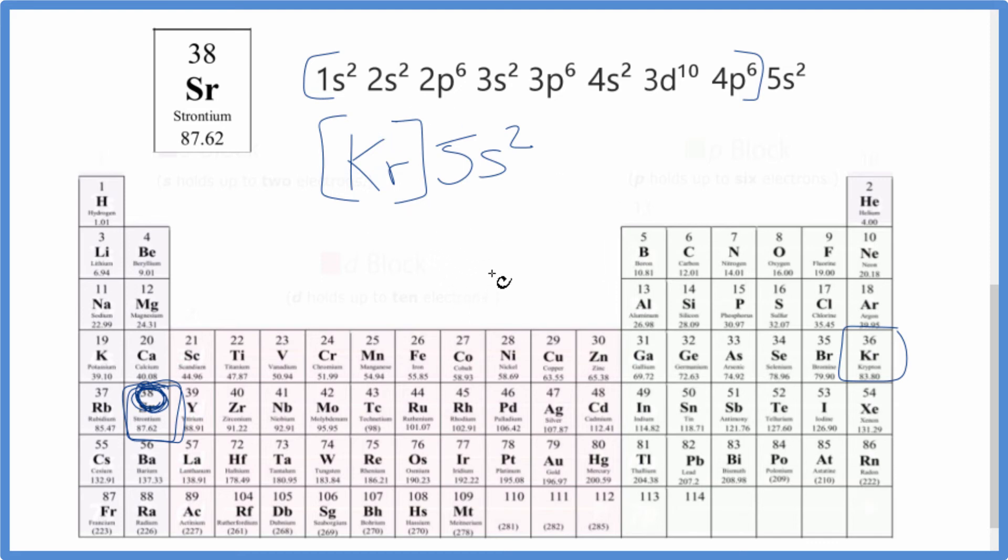When strontium becomes an ion, it's going to lose the electrons in its highest energy level. It's going to lose these outer shell electrons right here. These are going to go away. And so the electron configuration for Sr2+, that's going to be right here, and we would just write that.